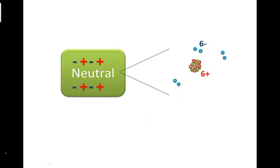An object or an atom is neutral if it has just as many positive charges, just as many protons, as negative charges, electrons. But sometimes these neutral atoms lose electrons and then they become positively charged because now they have more protons than they have electrons.